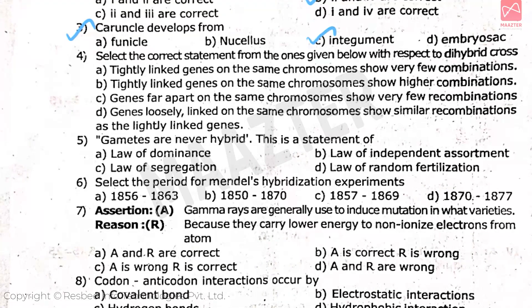Question number 4: select the correct statement from the ones given below with respect to dihybrid cross — the correct answer is option A. Question number 5: gametes are never hybrid — this is the statement of — the correct answer is option C. Question number 6: select the period for Mendel's hybridization experiments — the correct answer is option A.